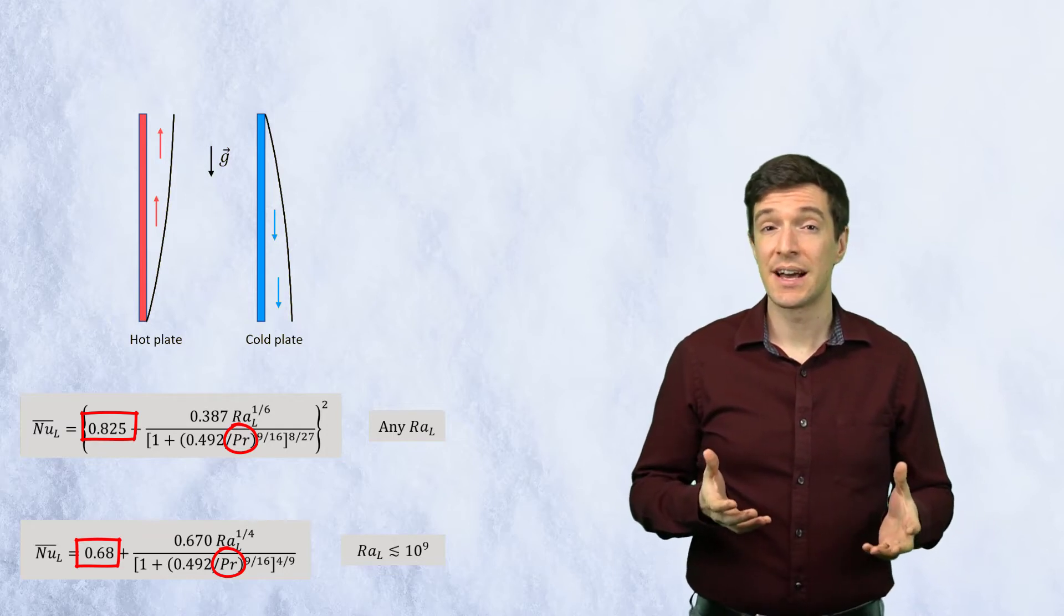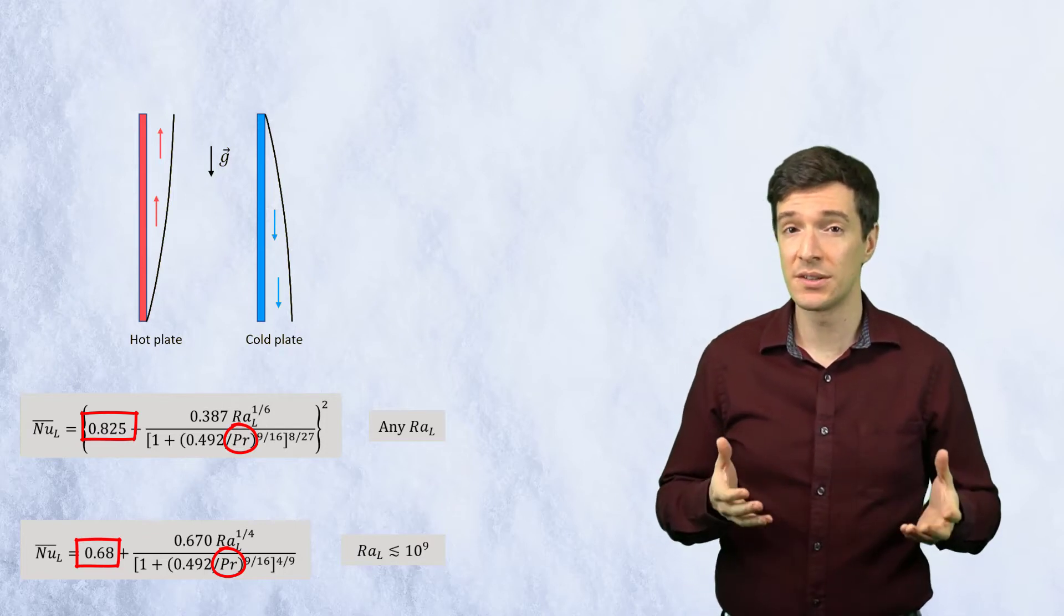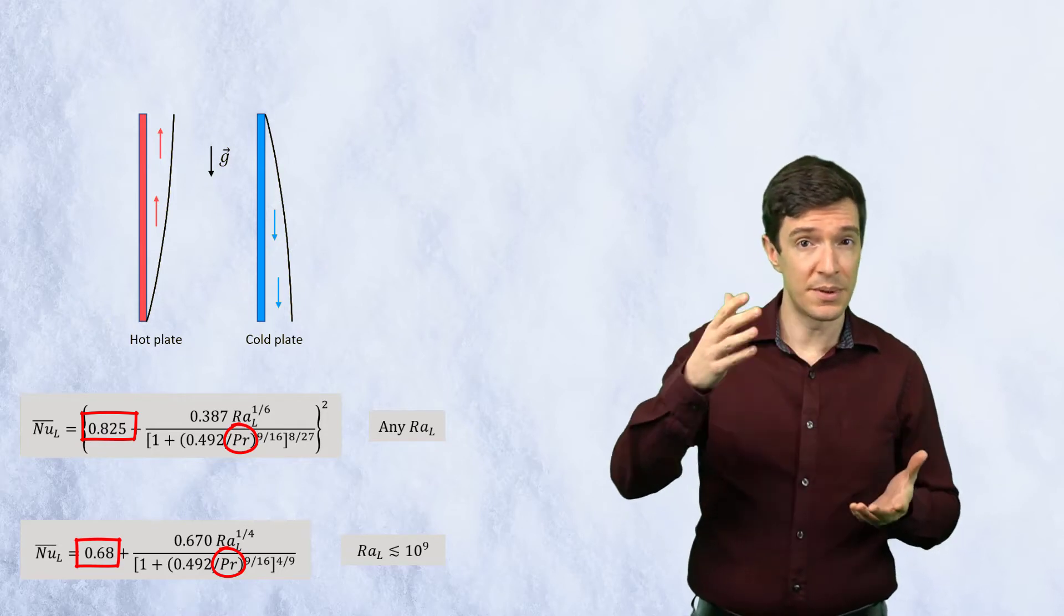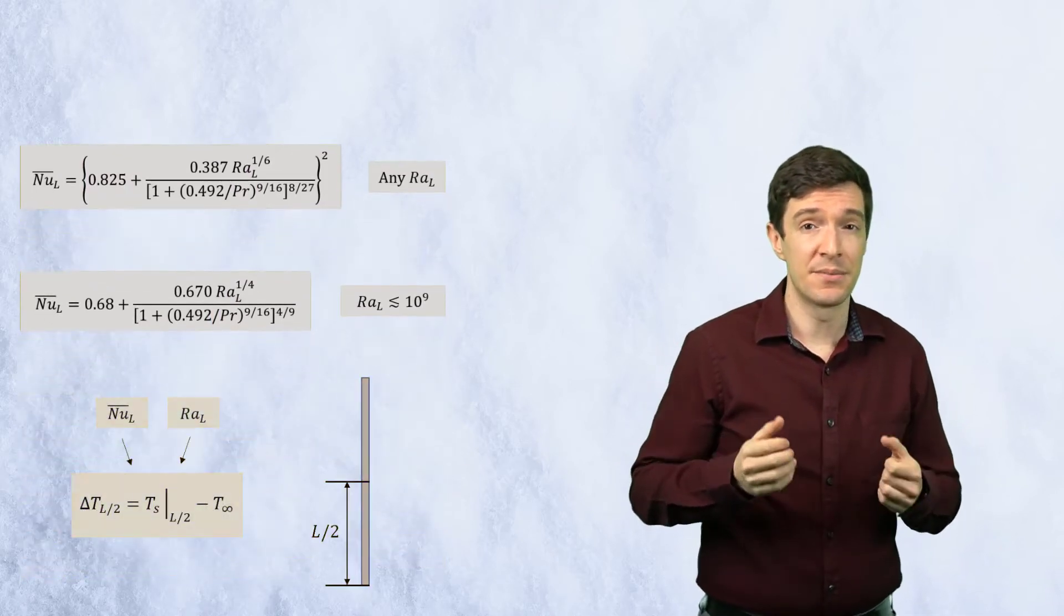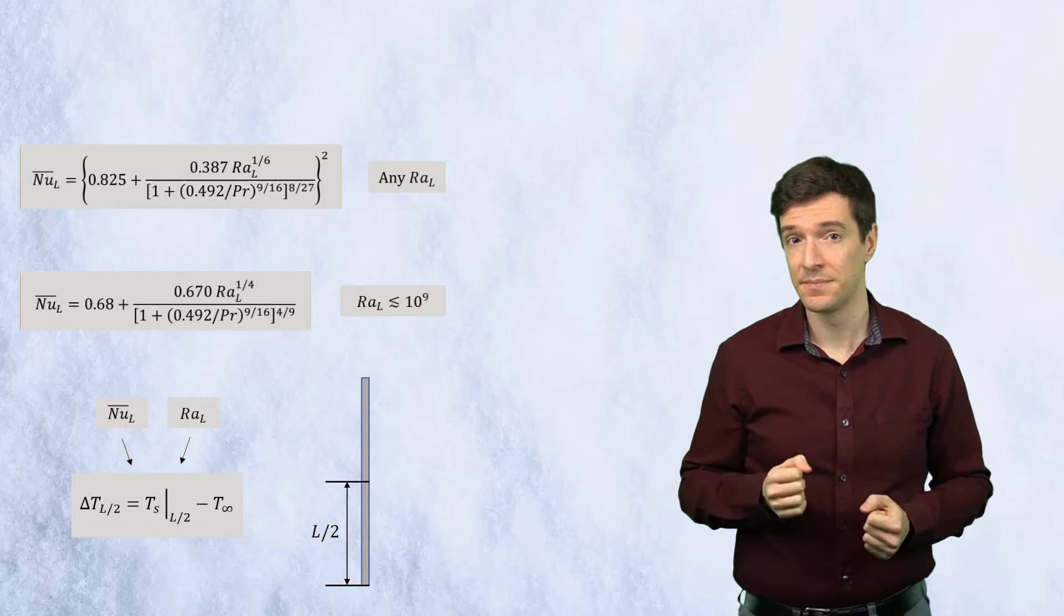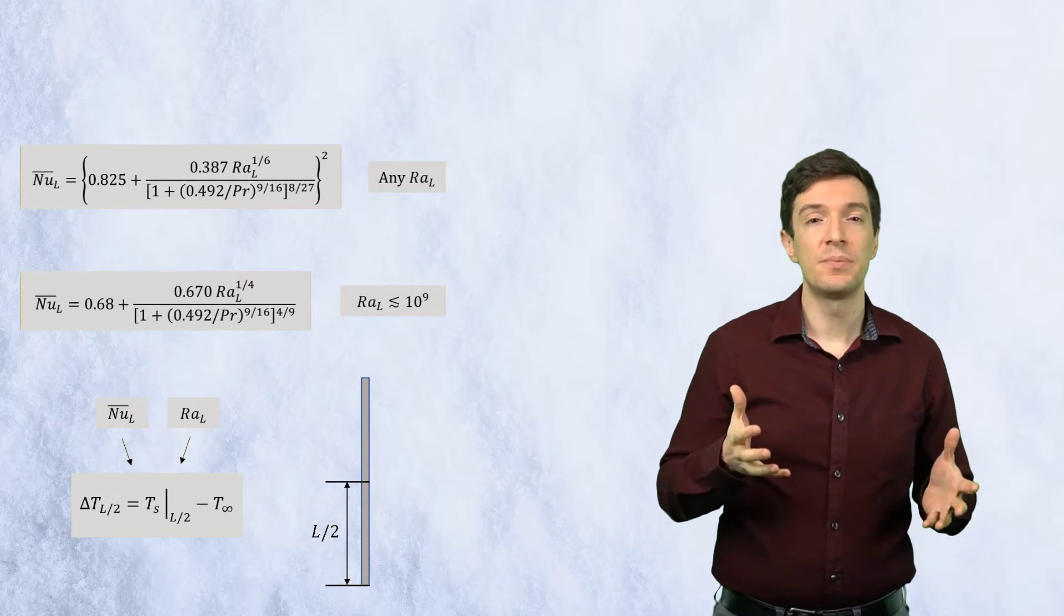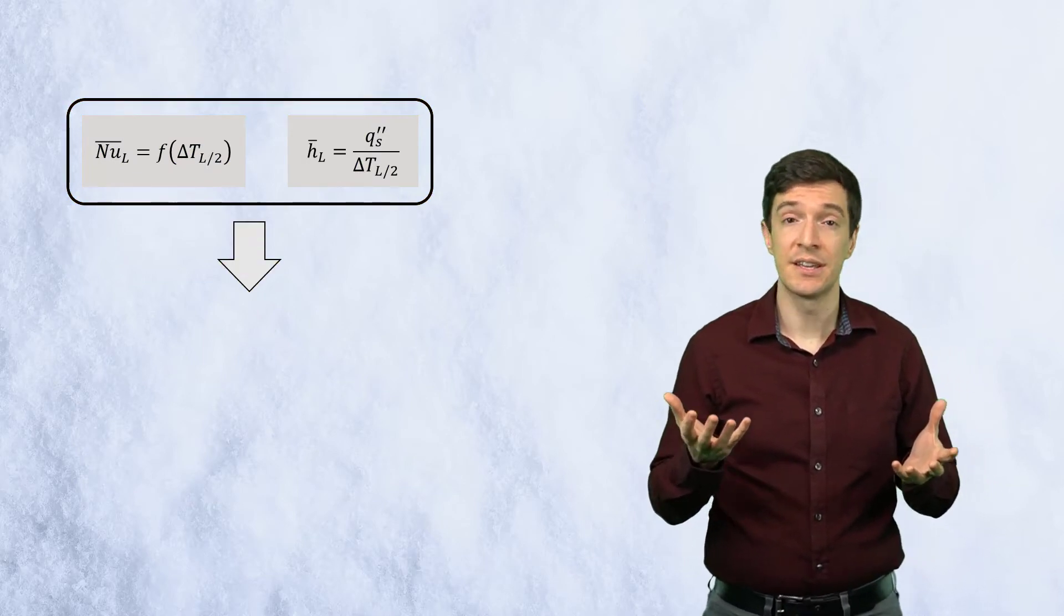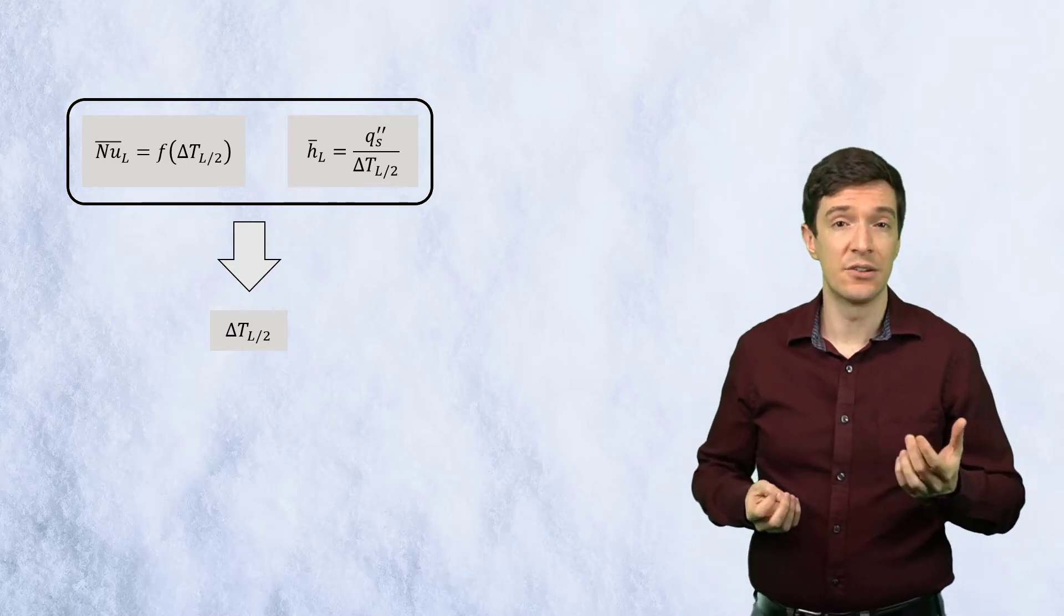These correlations are valid for isothermal vertical plates. However, they can also be used for constant surface heat flux, when the temperature is not constant along the plate. The trick is to estimate the Nusselt number and the Rayleigh number using the temperature difference at the half length of the plate. The value delta T L over 2 can be obtained by combining the average Nusselt number relation with the expression for the average heat transfer coefficient, and then solving numerically for delta T L over 2.